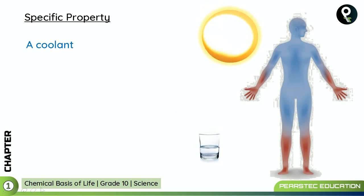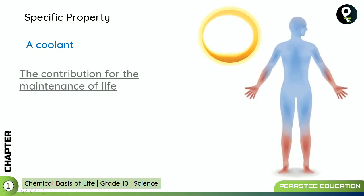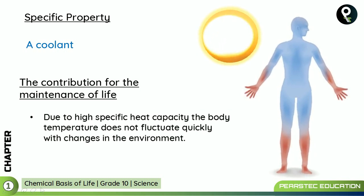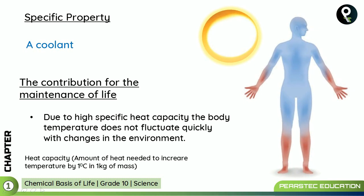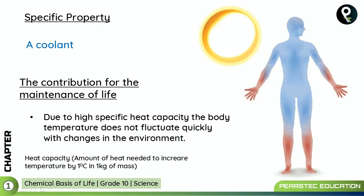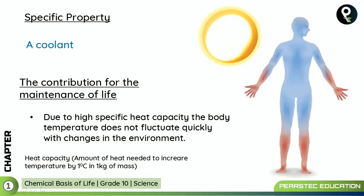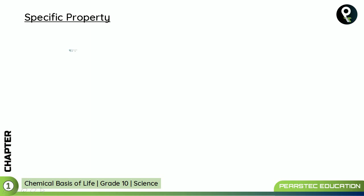Another specific property is that water acts as a coolant. When you're taking water on a hot day, your body becomes cool. Due to high specific heat capacity, the body temperature does not fluctuate quickly with changes in the environment. Heat capacity is the amount of heat needed to increase temperature by 1 degree Celsius in 1 kilogram of mass. The 60–70% water in your body controls your temperature from rising and falling quickly. We must drink a lot of water to stay cool.